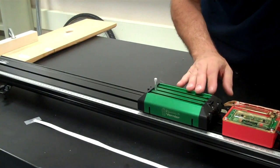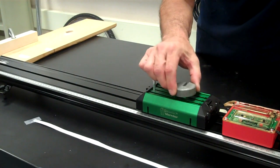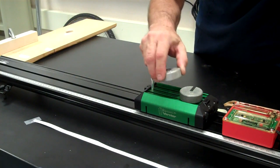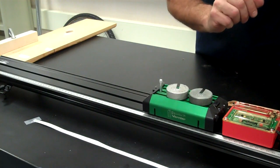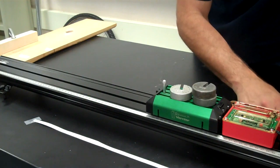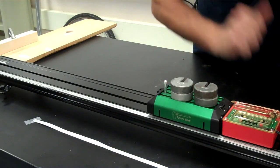You're going to do the experiment five times, once with the cart by itself. Then you're going to do it again with 200 grams of added mass, a third time with 400 grams of added mass, another time with 600, and the final and fifth time with 800 extra grams of mass.